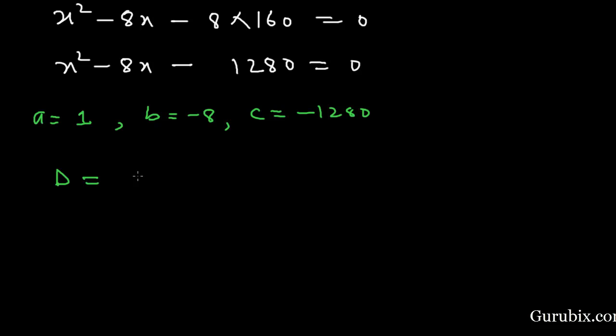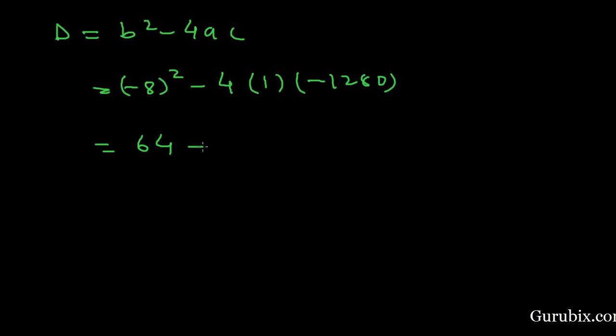B is minus 8 and C is minus 1280. Now we shall find the discriminant, that is B squared minus 4AC. B is minus 8, so we will find the square of minus 8. Here is minus 4 times 1 times minus 1280. This equals 64 plus 5120. This equals 5184.